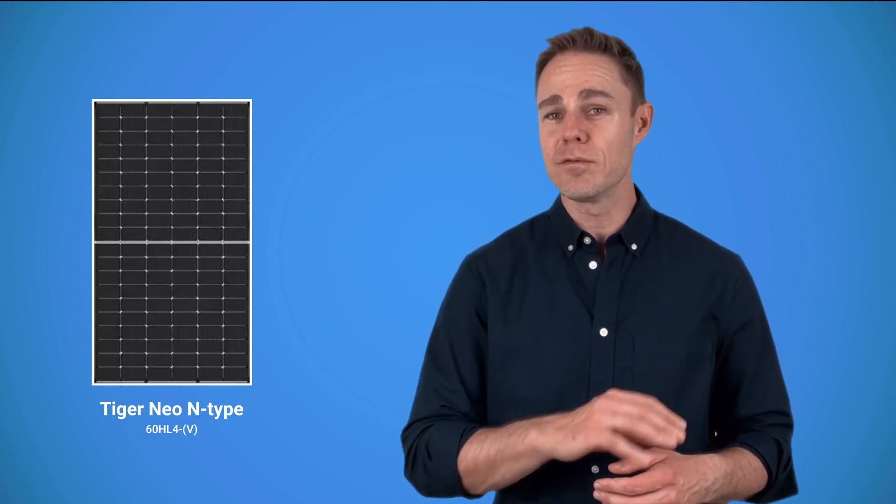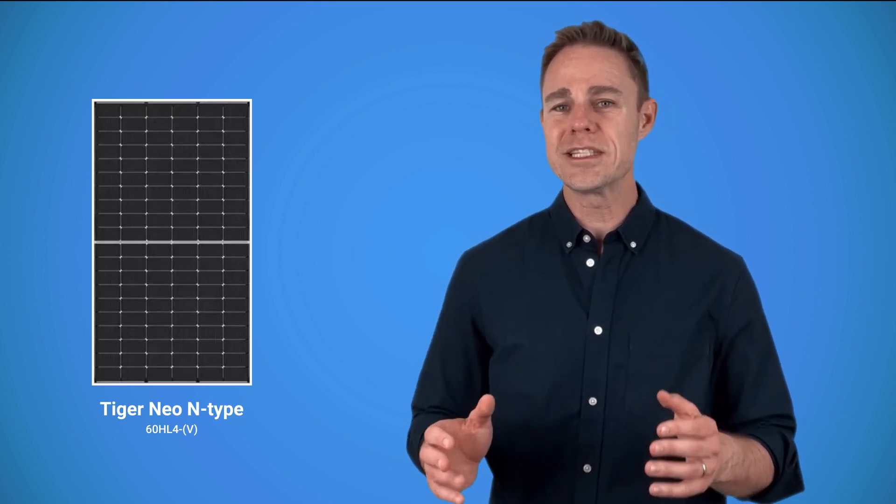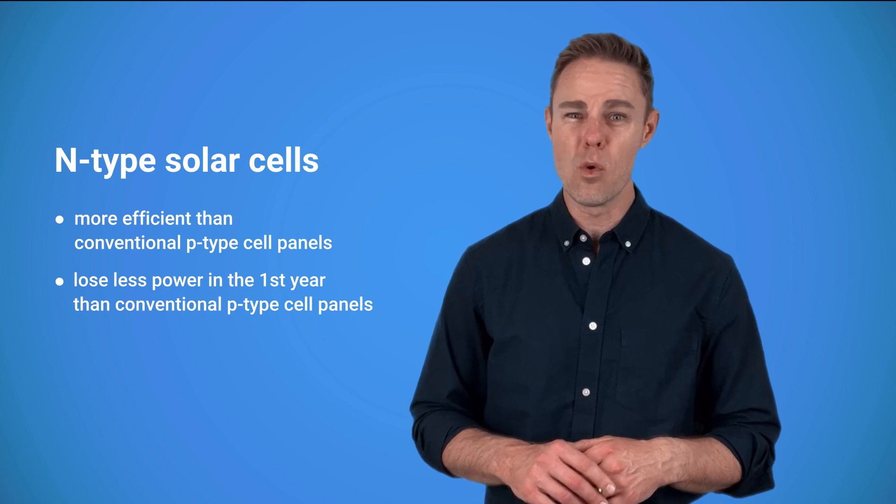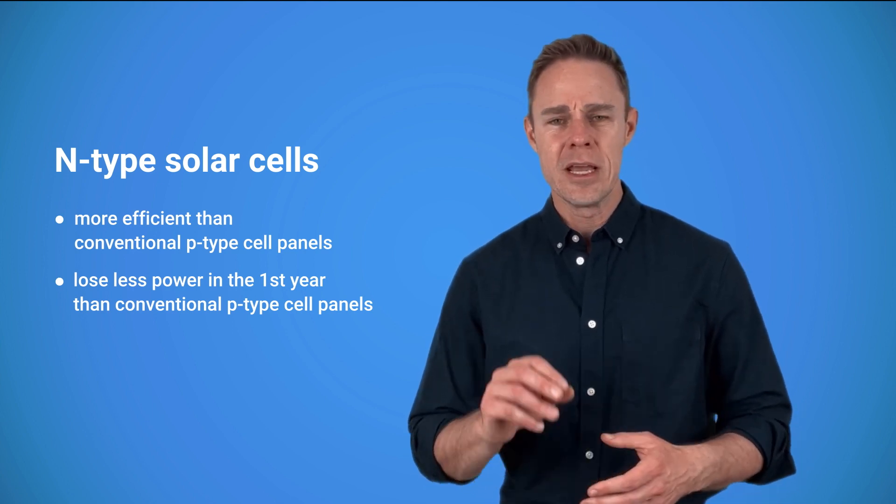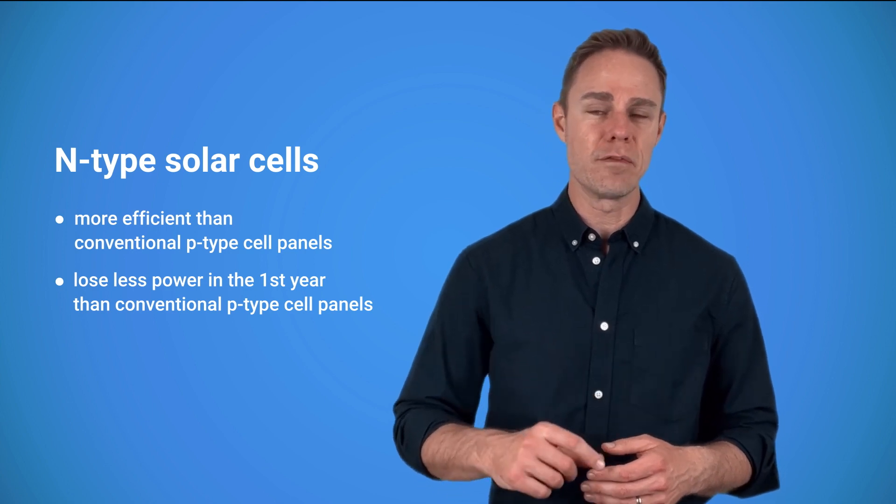However, there is a variation for home and medium-sized commercial systems which put out from 460 to 480 watts. It's made with N-type cells, as opposed to more widespread P-type cells. N-type cells are more efficient and they lose less power in the first year of operation. Tiger Neo is a Chinese panel, which means it is a very affordable product.